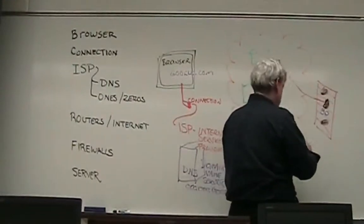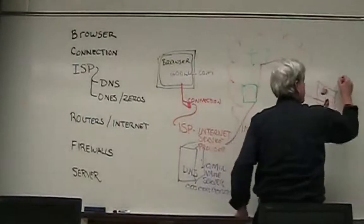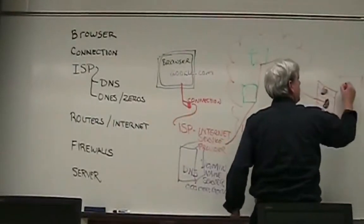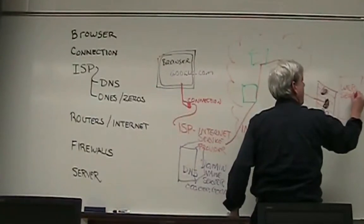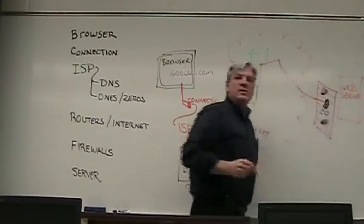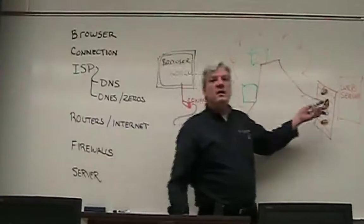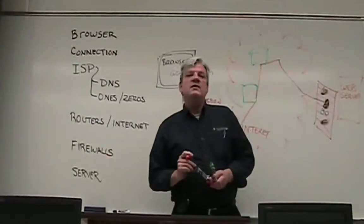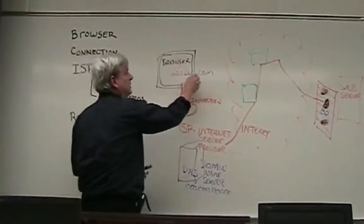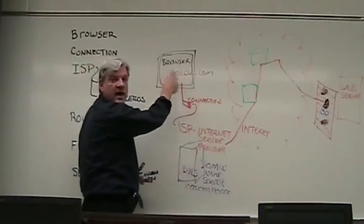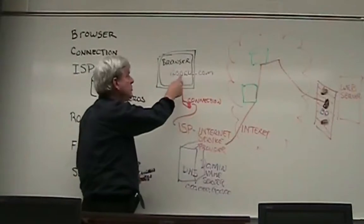And then from there, we go up, and here's our server with our web page. Now, what's on the server is a series of text documents that end in HTML. And when we were in the browser, and we said google.com, we're basically asking for the main page of google.com.